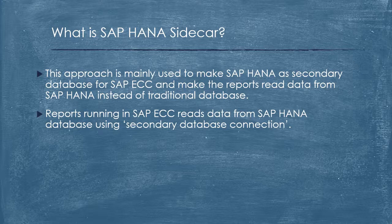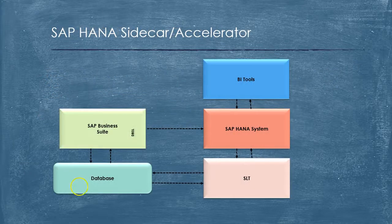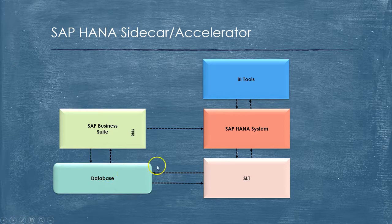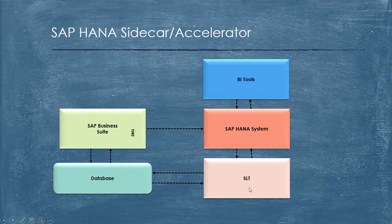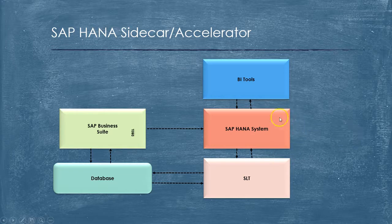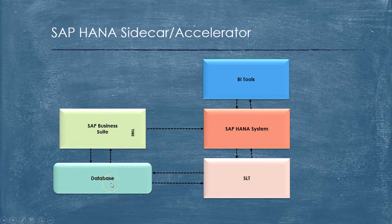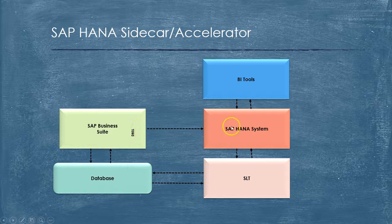Let's look at how the architecture looks. We have our ECC — our business suite — running on a traditional database. A customer can pick one module and replicate all the tables relevant to that module to the SAP HANA database using SLT, which is the SAP Landscape Transformation tool, used to perform real-time replication. Once data is replicated, customers will have their reports in ECC accessing data from the traditional database; instead, they can perform the same reads on the tables residing in HANA using a secondary database connection.